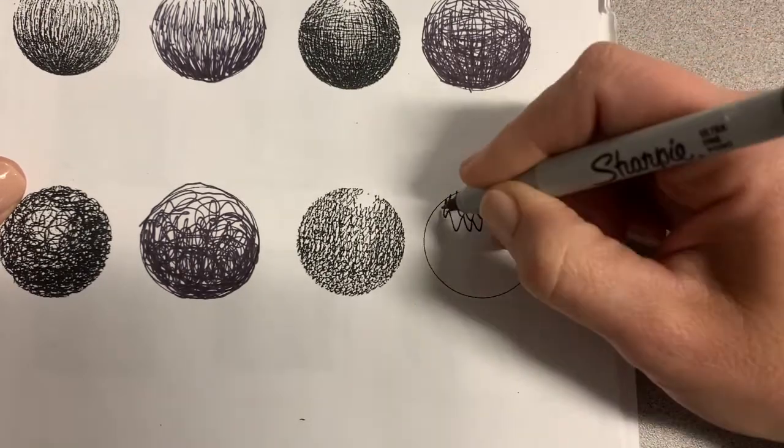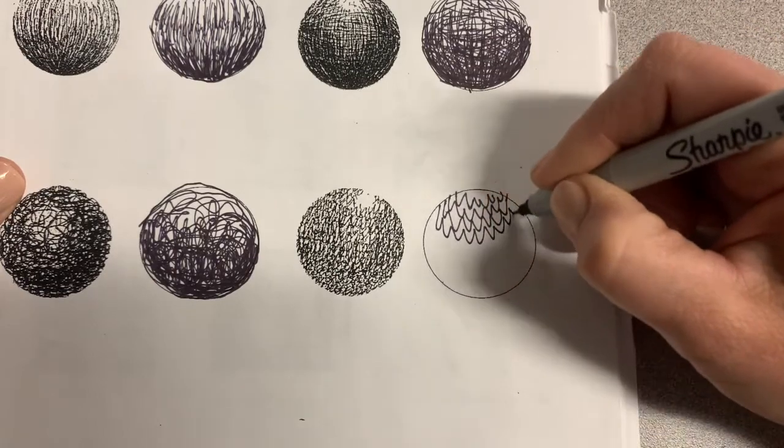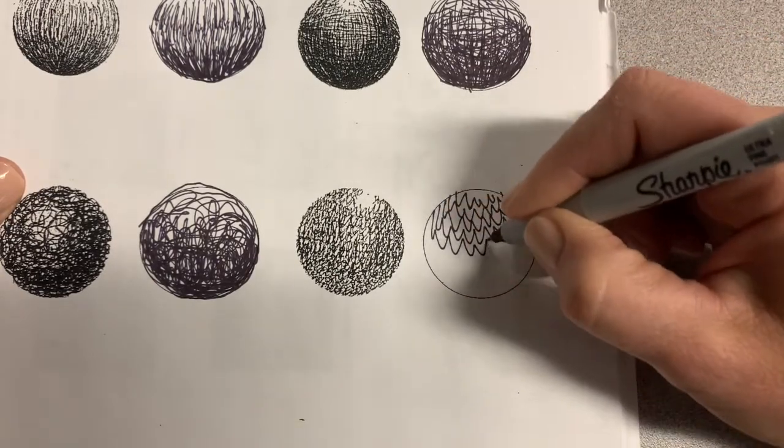The scribble technique is random in line direction. The wavy lines technique is uniform in direction.